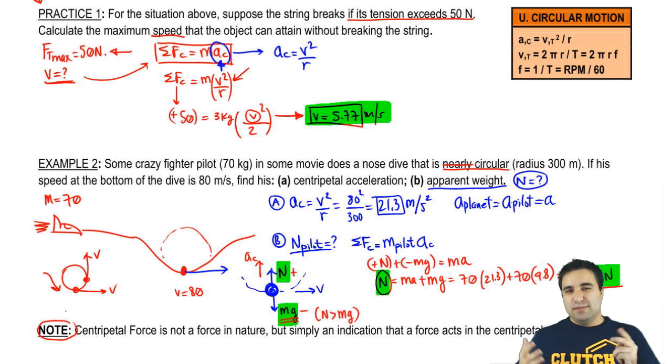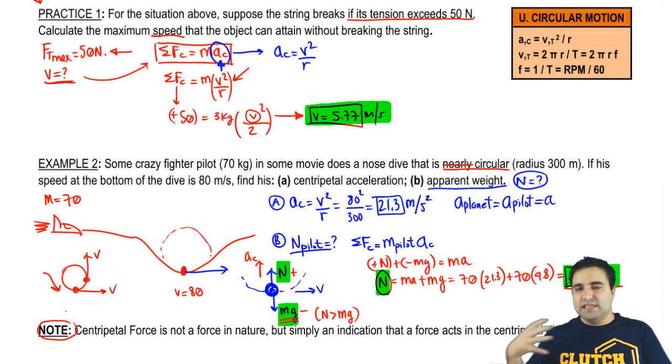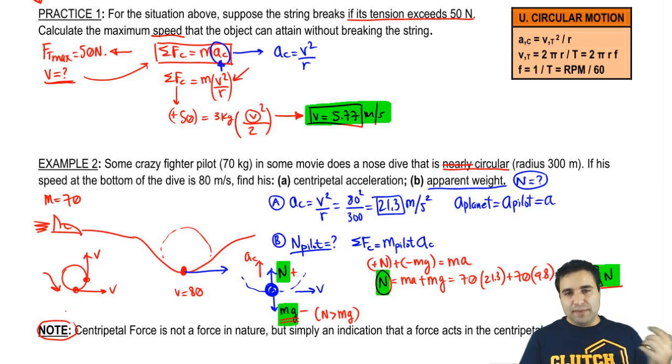So normal becomes centripetal, or is categorized as a centripetal force. Tension might be a centripetal force. But centripetal force itself is not a unique force. It's not a thing, it's just sort of a type of force, or an indication of direction of force. So you might label a force as centripetal, but centripetal force in itself is not anything. Another force that is actually a force of nature will be categorized as a centripetal force. So I hope that makes sense. That's it for this one, guys. Thank you.